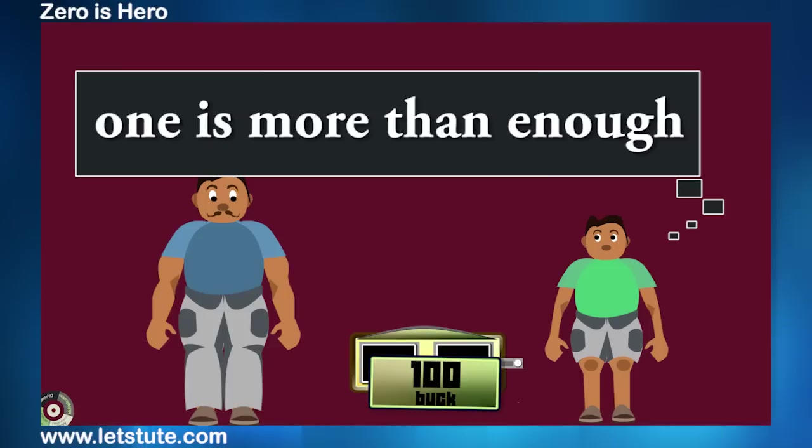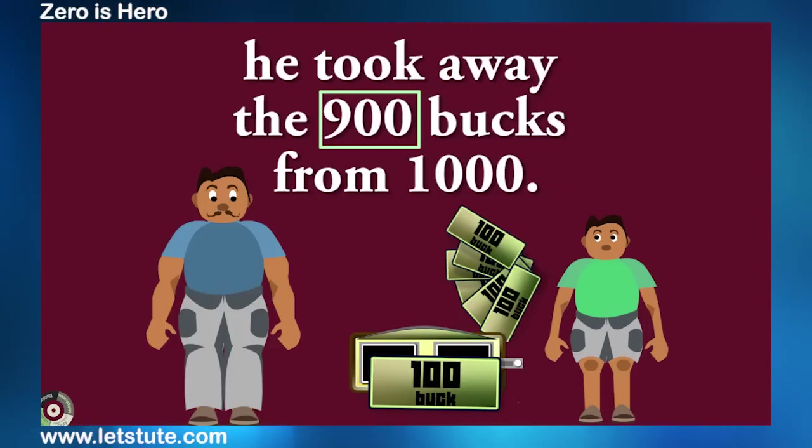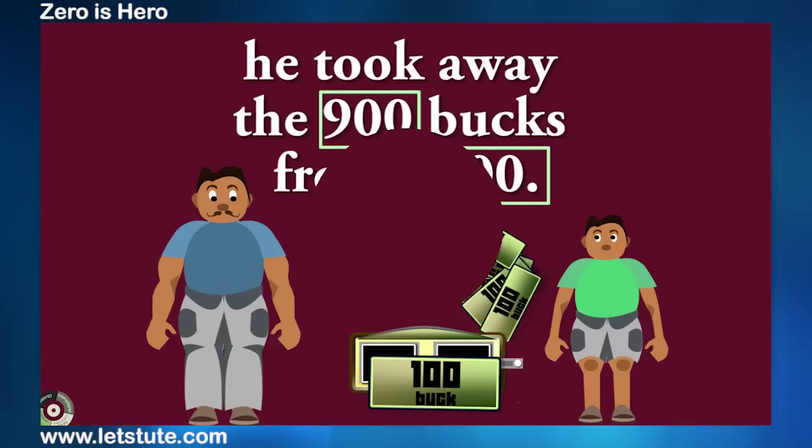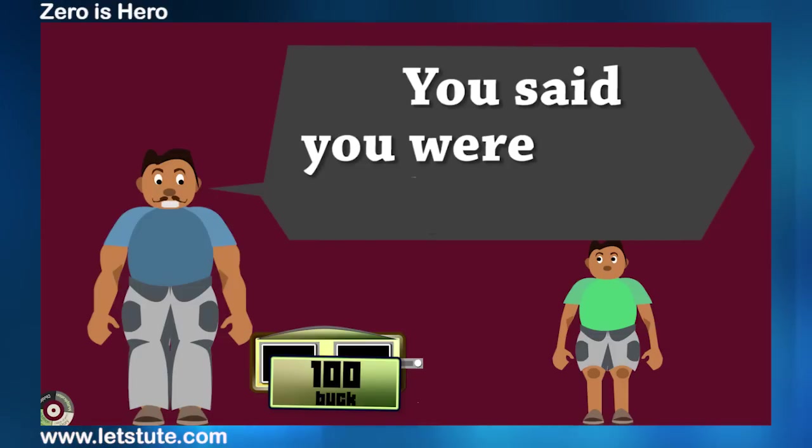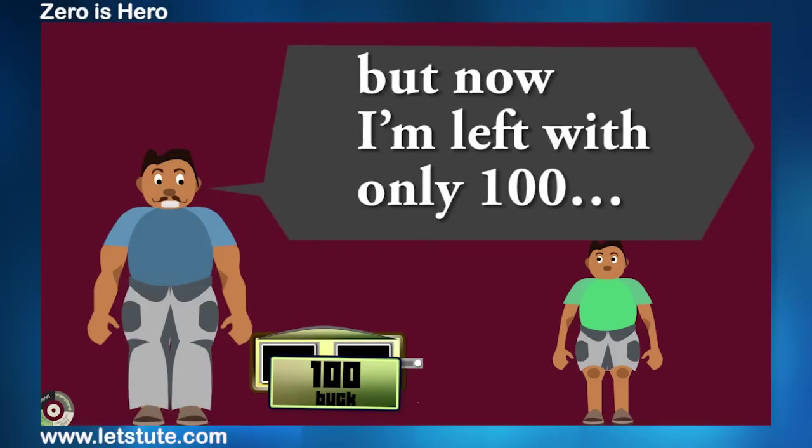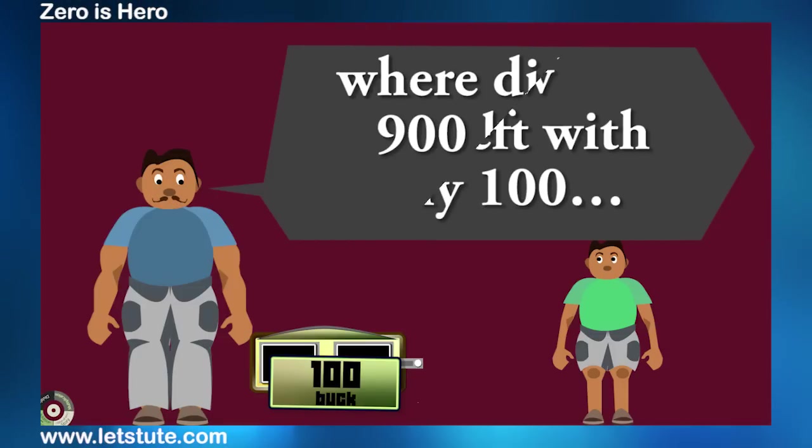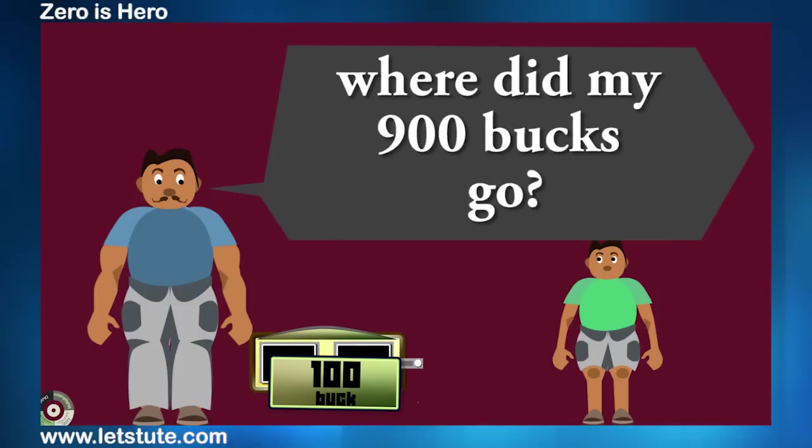Harry said, one is more than enough. And he took away the 900 bucks from 1000. His dad was surprised. You said you were taking only one zero. But now I am left with only 100. Where did my 900 bucks go?